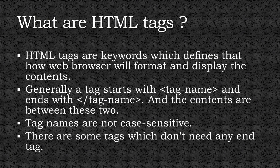What are HTML tags? HTML tags are keywords which define how a web browser will format and display the contents. Generally, a tag starts with a tag name within angular brackets, and ends with a forward slash followed by the tag name within angular brackets. In between these two, we write the contents.